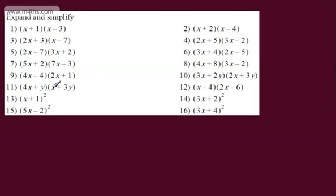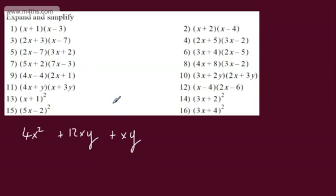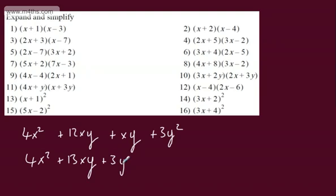Let's look at 4x plus y multiplied by x plus 3y. 4x multiplied by x is 4x squared. 4x multiplied by 3y gives us plus 12xy — we're just multiplying 4 and 3, then x and y. The inner terms give us plus xy. And finally, y multiplied by 3y gives us plus 3y squared. These xy terms are like terms, so collecting up: 4x squared plus 13xy plus 3y squared. That is our final answer.